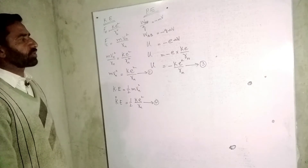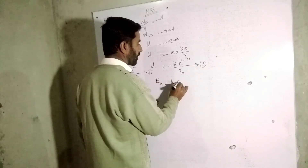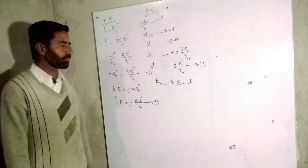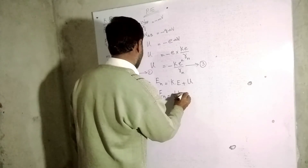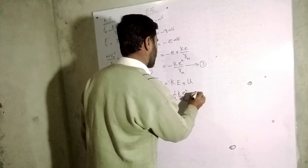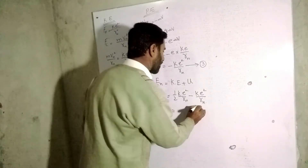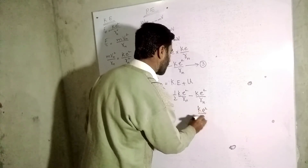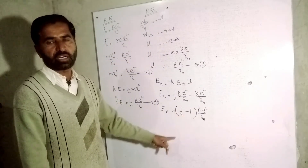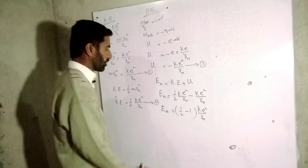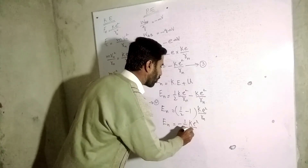Now we calculate the total energy En. En is the sum of kinetic energy and potential energy. Substituting the values: En = ½ke²/rn − ke²/rn. Taking ke²/rn common, the remaining terms are (½ − 1), giving minus one-half. Therefore, En = −½ke²/rn.